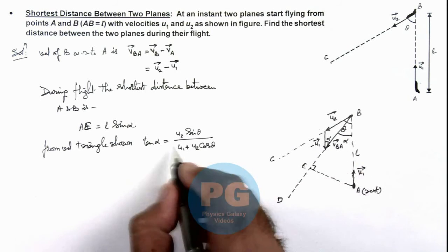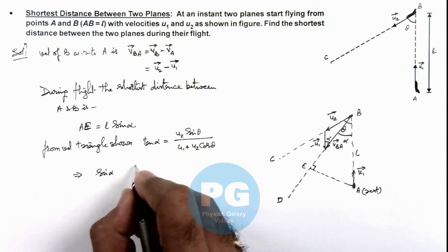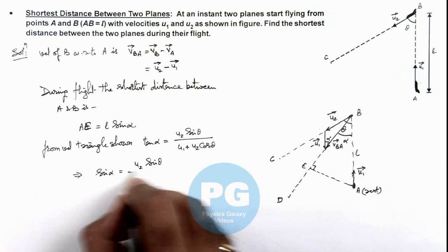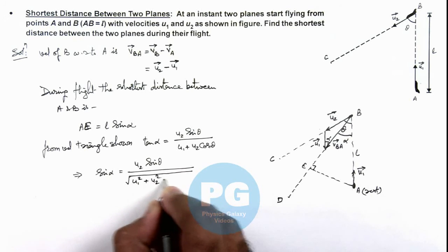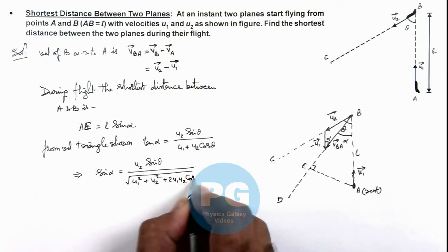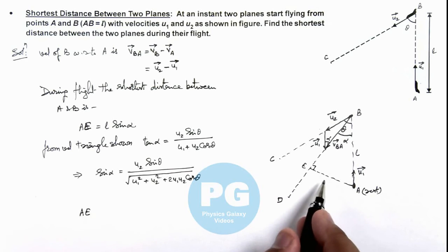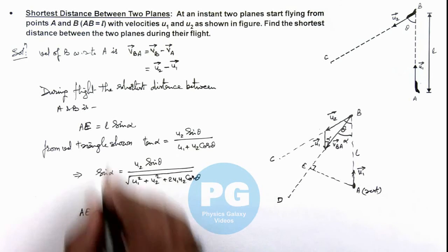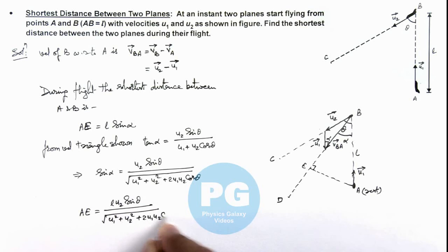And from this value of tan alpha I can calculate the value of sin alpha. Here the value of sin alpha will be u2 sin theta divided by the square root of u1 squared plus u2 squared plus 2u1 u2 cos theta. So if we substitute the value over here, the distance AE which is the shortest distance between the two planes during the flight can be given as L sin alpha. So it is L u2 sin theta divided by the square root of u1 squared plus u2 squared plus 2u1 u2 cos theta. So this will be the final result of our problem.